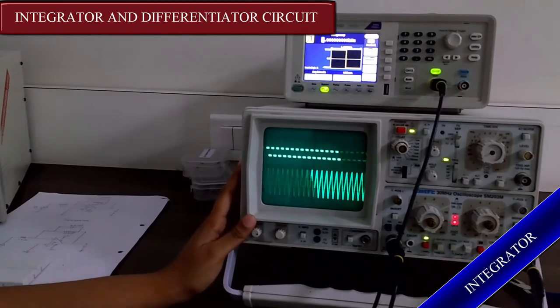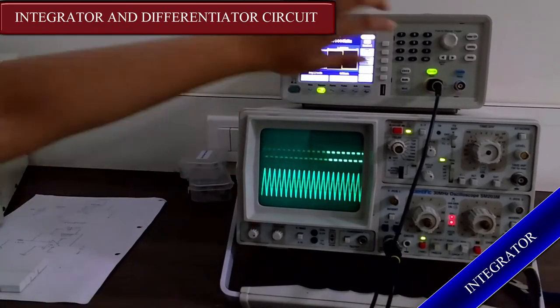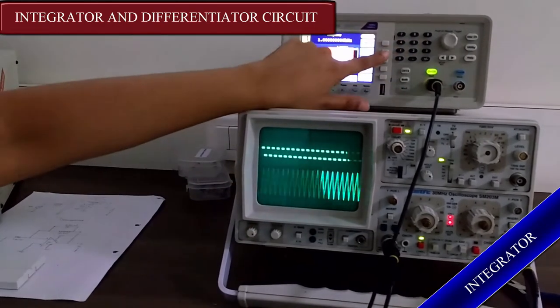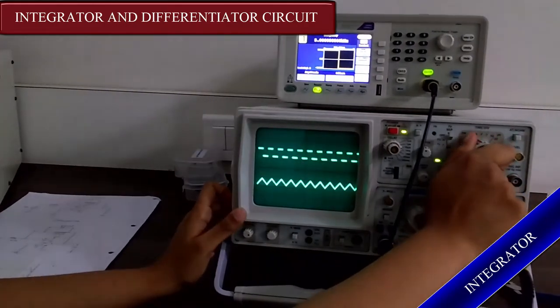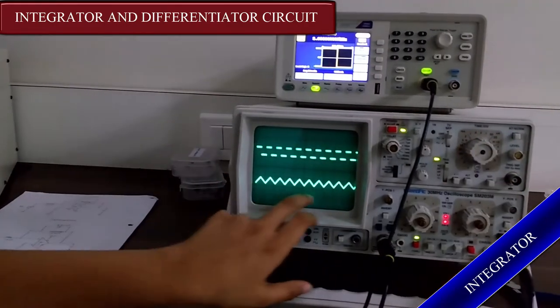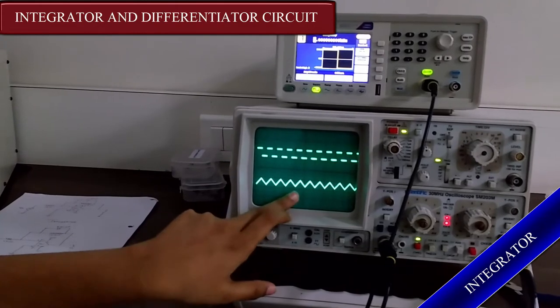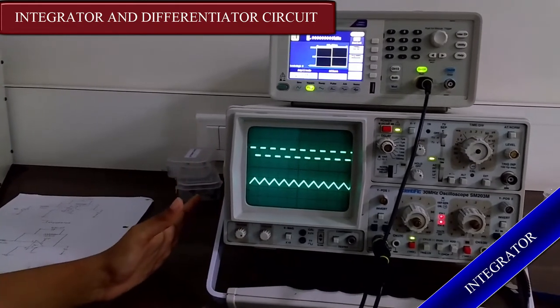Now let's see what happens if we increase the frequency. So let's see at 5 kilohertz. You can see now that it has become triangular and this triangle is much more better than the previous one.